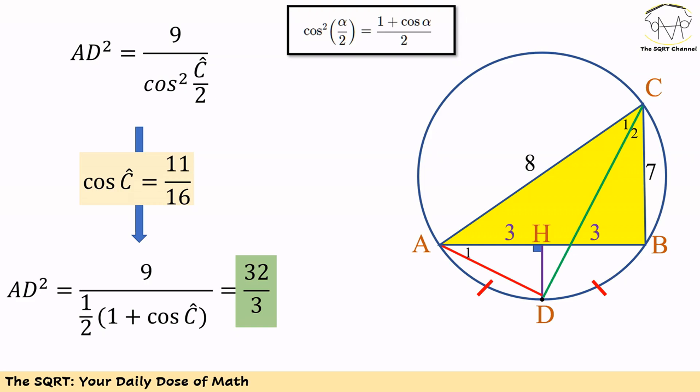We can find the final value: AD² = 32/3.